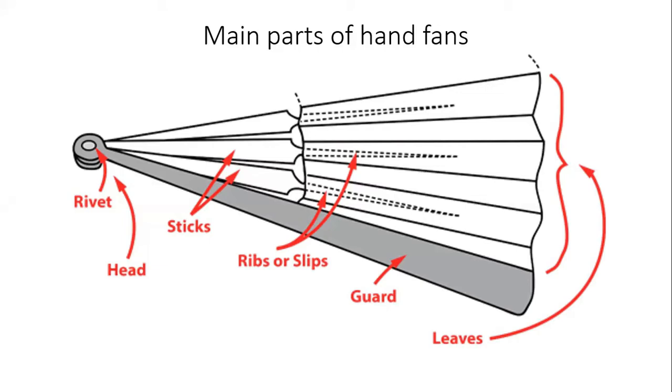Gorge: the part between the head and the leaf. Guards: the two outer sticks, normally thicker and stronger than the inner sticks and sometimes highly decorated, that act as protection for the closed fan.